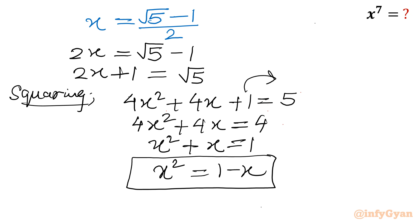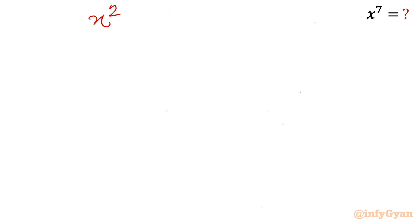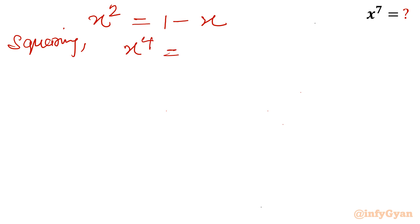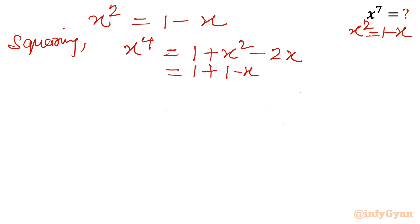To get x power 4, square x² = 1 − x again. So x⁴ = (1 − x)² = 1 + x² − 2x. Substituting x² = 1 − x: x⁴ = 1 + (1 − x) − 2x = 2 − 3x. This is the value of x power 4.